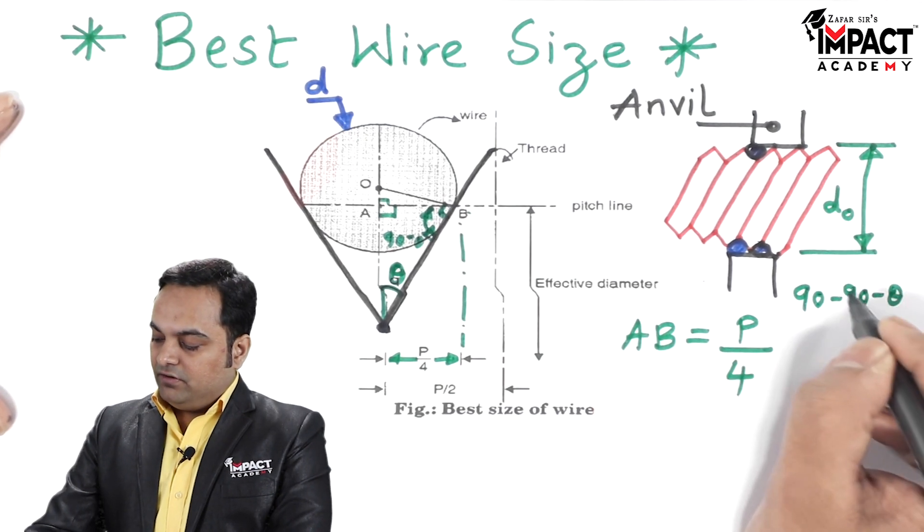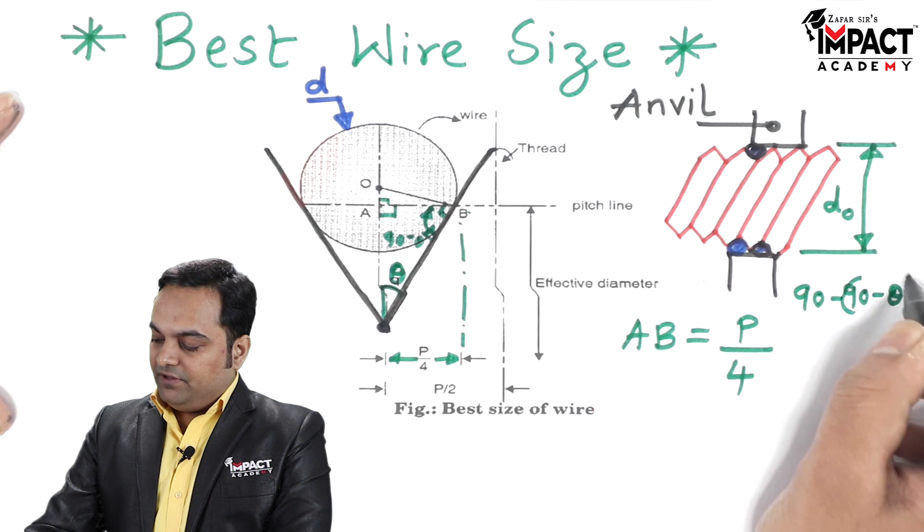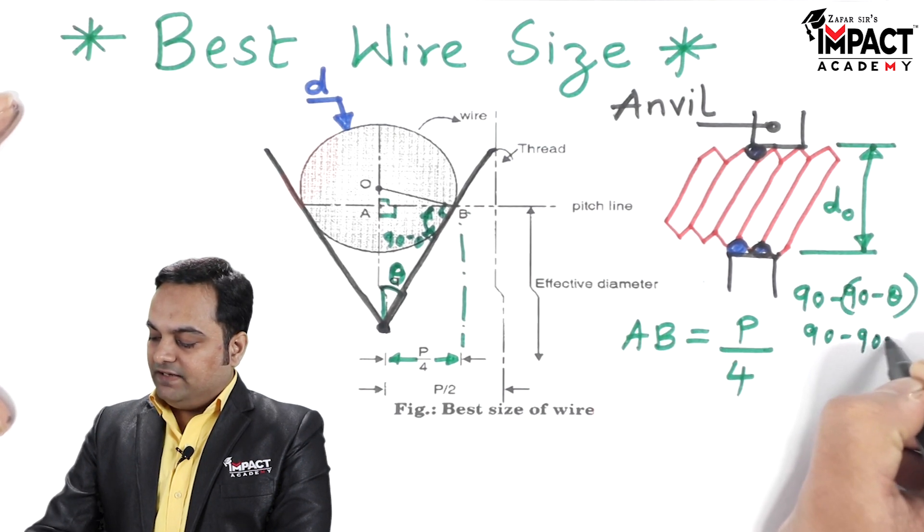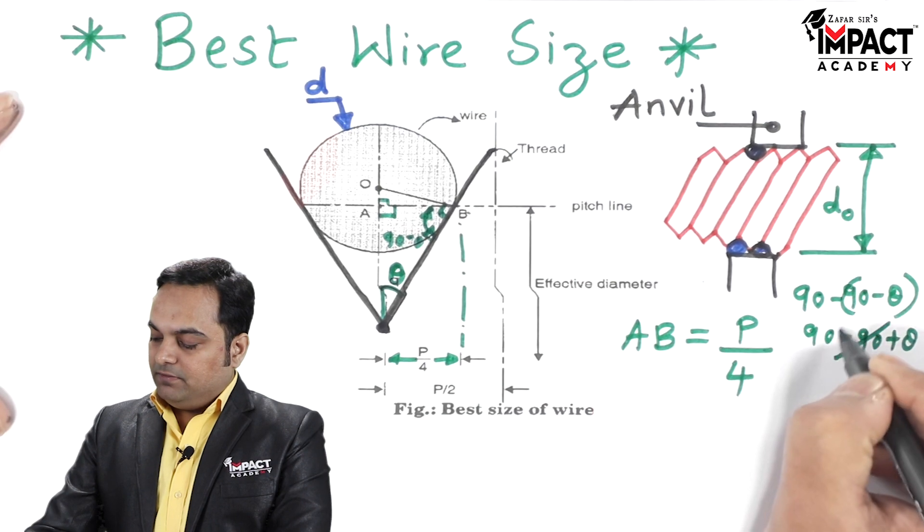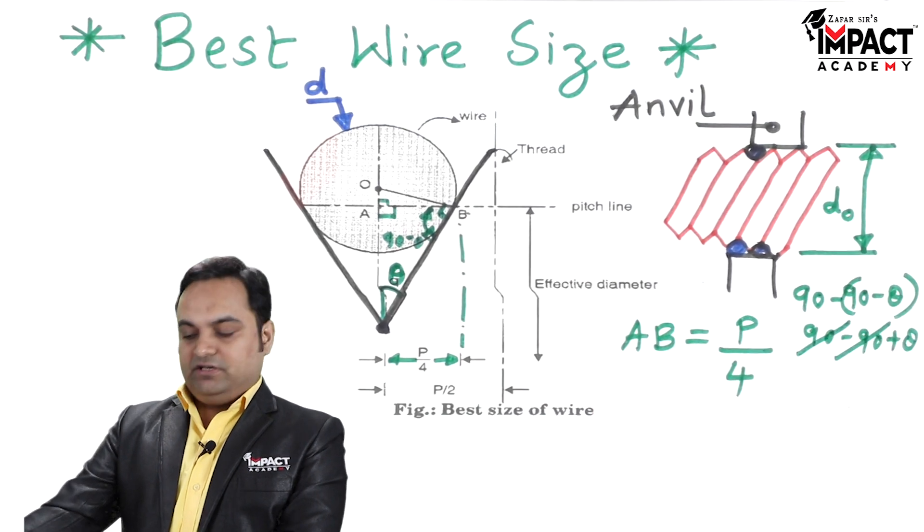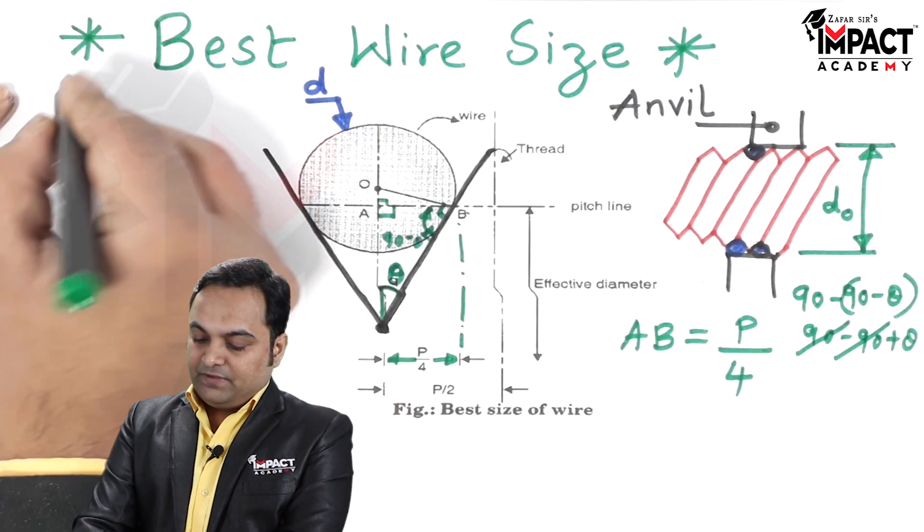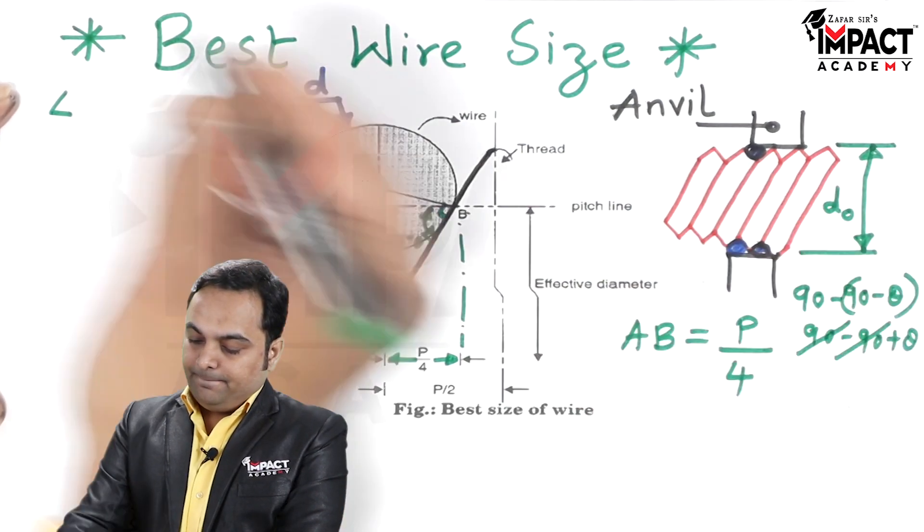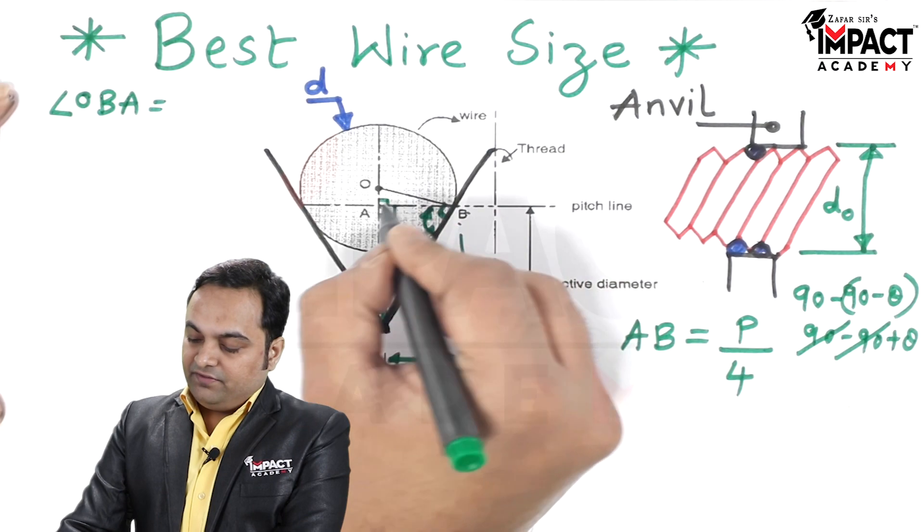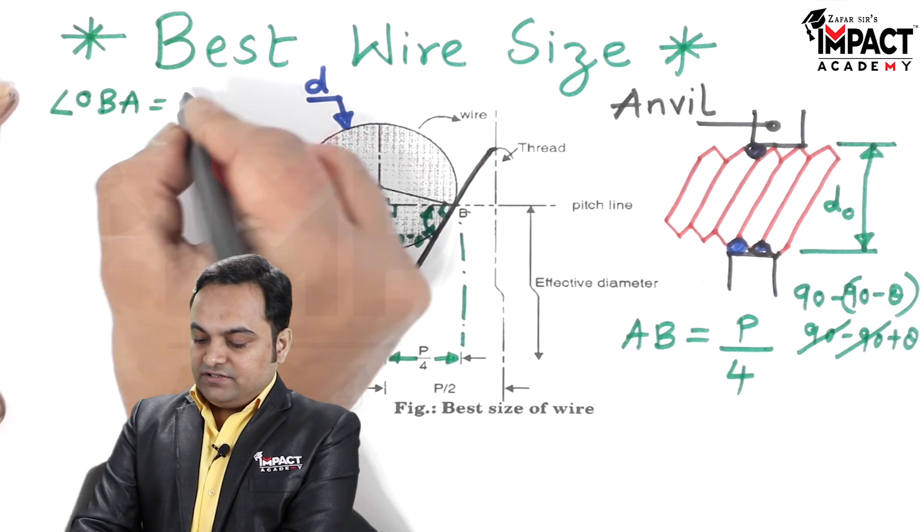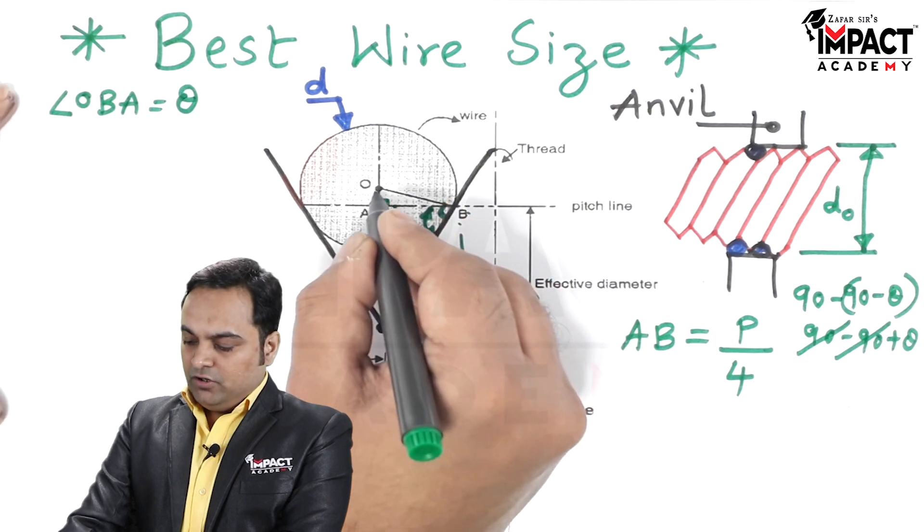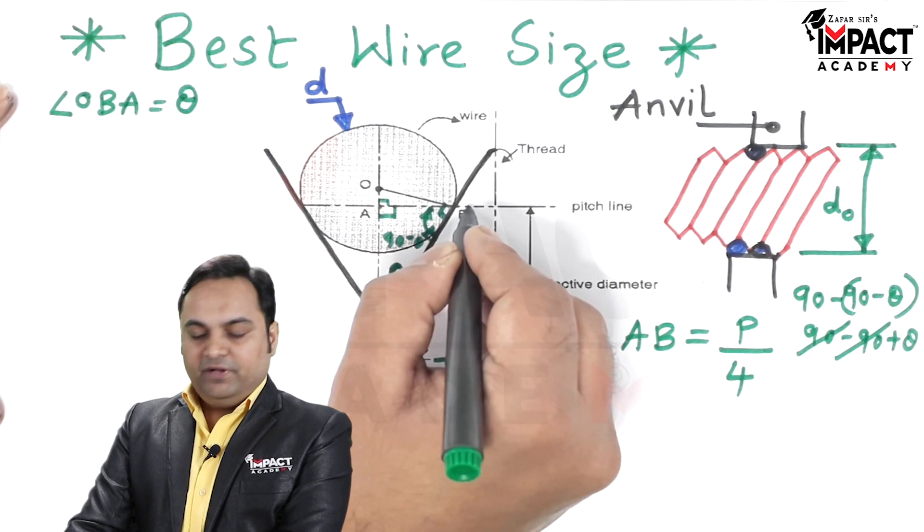Next, the complete perpendicular over here is 90. So angle OBA would be 90 minus (90 minus theta). So if it is 90 minus (90 minus theta), here I am placing a bracket. Once I open the bracket it is 90 minus 90 plus theta. 90 minus 90 gets cancelled out. So this angle, angle OBA, or we can say ABO, that is equal to theta.